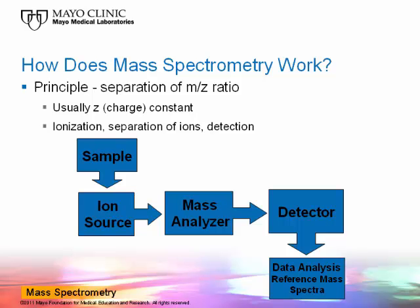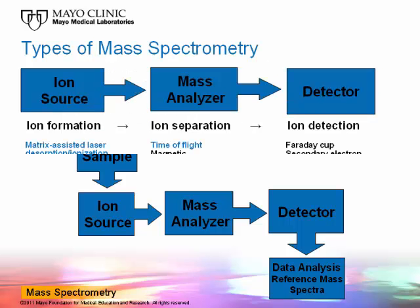Mass spectrometry measures particles based on their mass-to-charge ratio. To do this, a sample — in the described method, the whole organism — is exposed to an ion source and its particles, in the described method proteins, are ionized, separated based on their mass-to-charge ratio, detected, and then the generated mass spectrum is compared to a library of mass spectra.